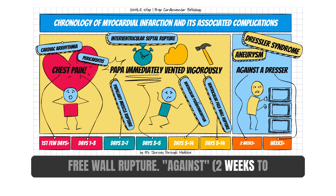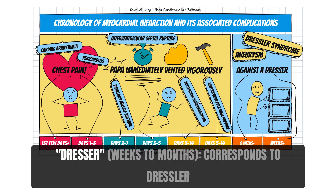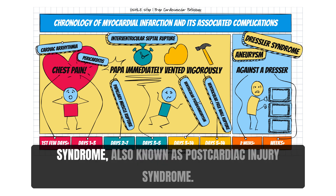Against — 2 weeks to months — indicates true ventricular aneurysm. Dresser — weeks to months — corresponds to Dressler syndrome, also known as post-cardiac injury syndrome.